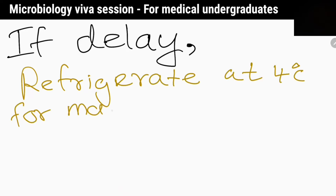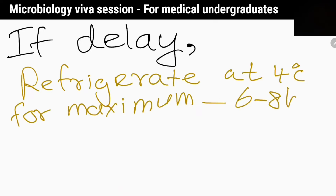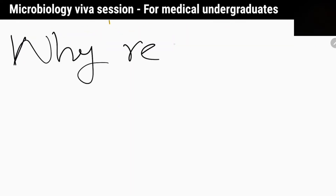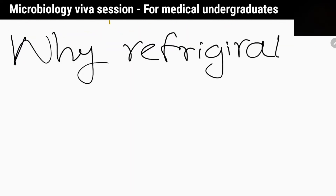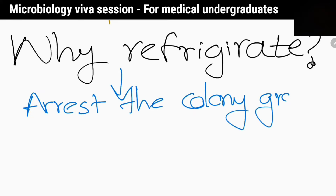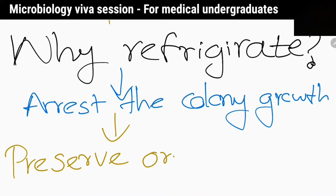What if there is a delay of more than two hours? Then the specimen should be refrigerated at 4°C for a maximum period of about 6-8 hours and transported on ice. Why do we refrigerate the sample? Urine is an excellent culture medium for organisms and its components decompose quickly, so to preserve the original colony count of the sample, we refrigerate it to arrest colony growth.